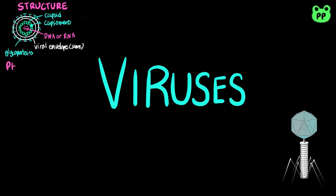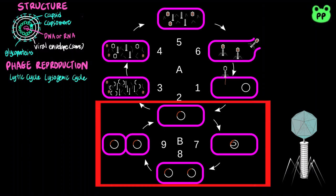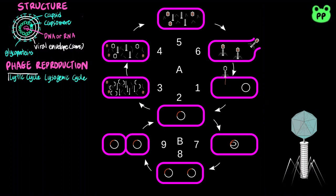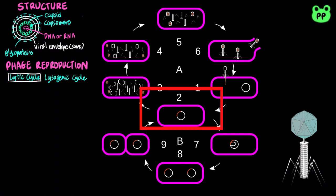Bacteriophages are viruses that infect bacteria. They have two reproductive mechanisms: the lytic cycle and the lysogenic cycle. During the lytic cycle, the phage first attaches to the host bacterium. Then, the phage injects its own DNA and degrades host DNA.